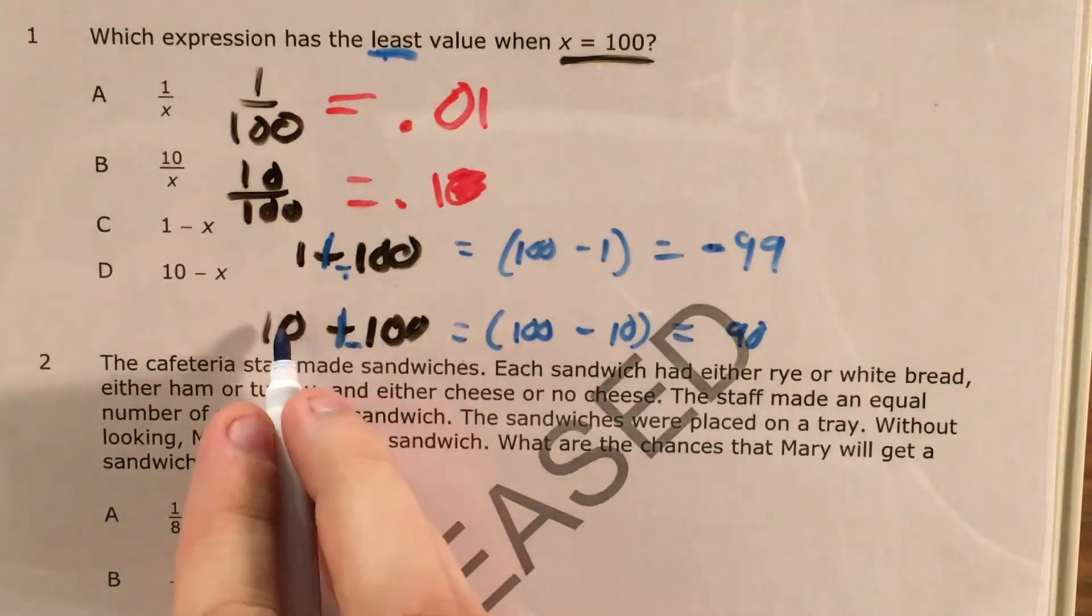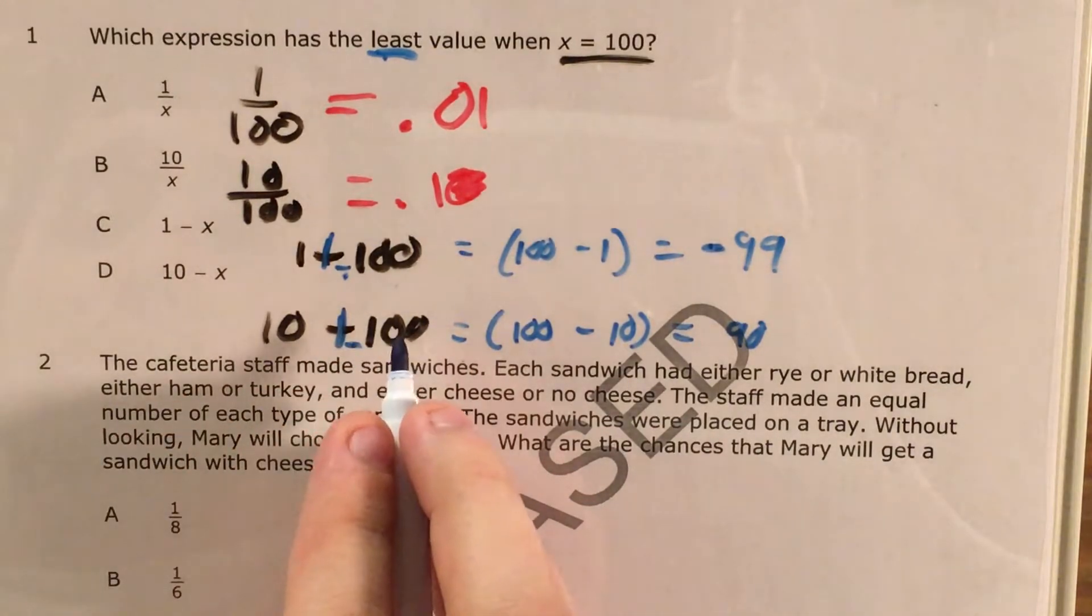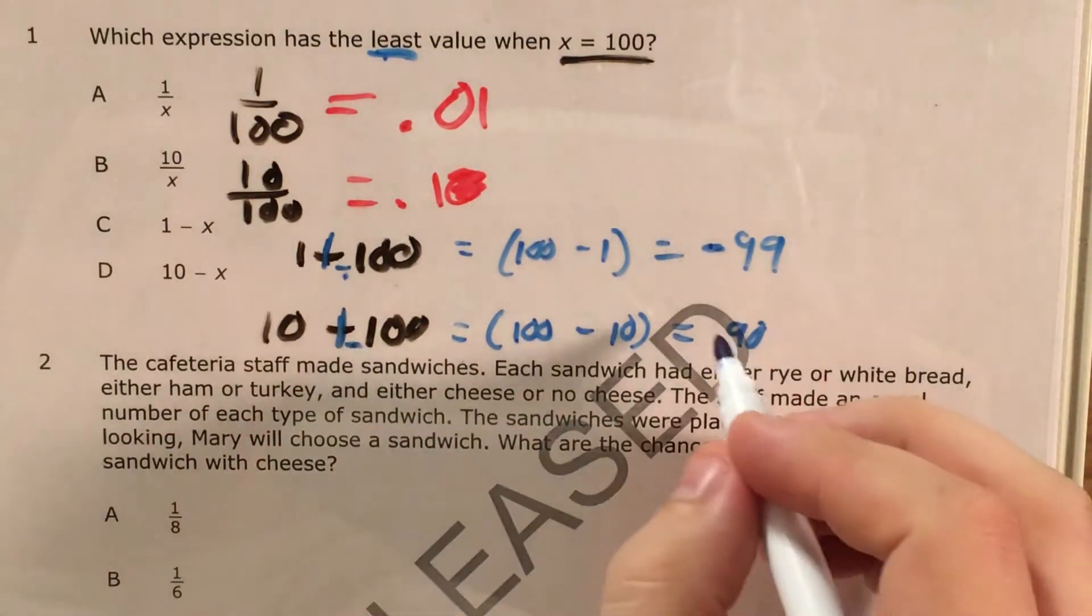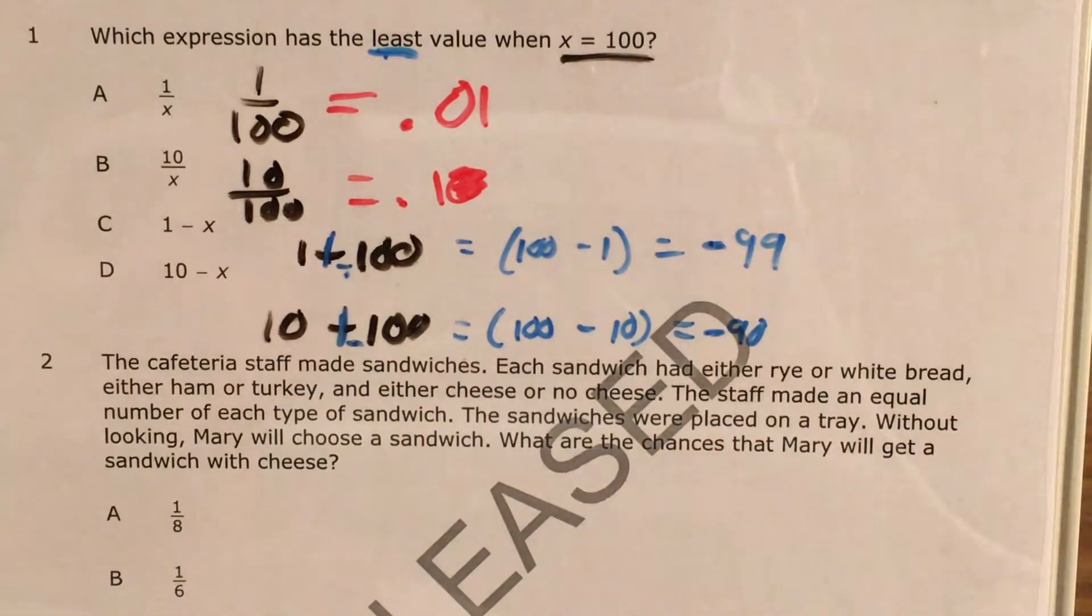I look for my larger absolute value. My larger absolute value is 100. 100 is attached to a negative sign, so this is negative 90.